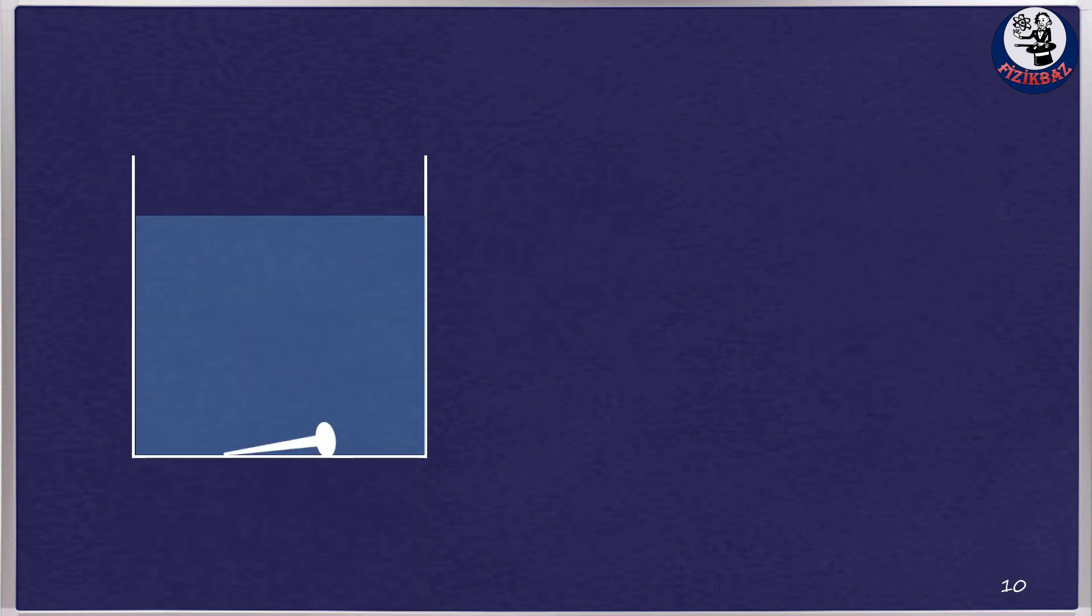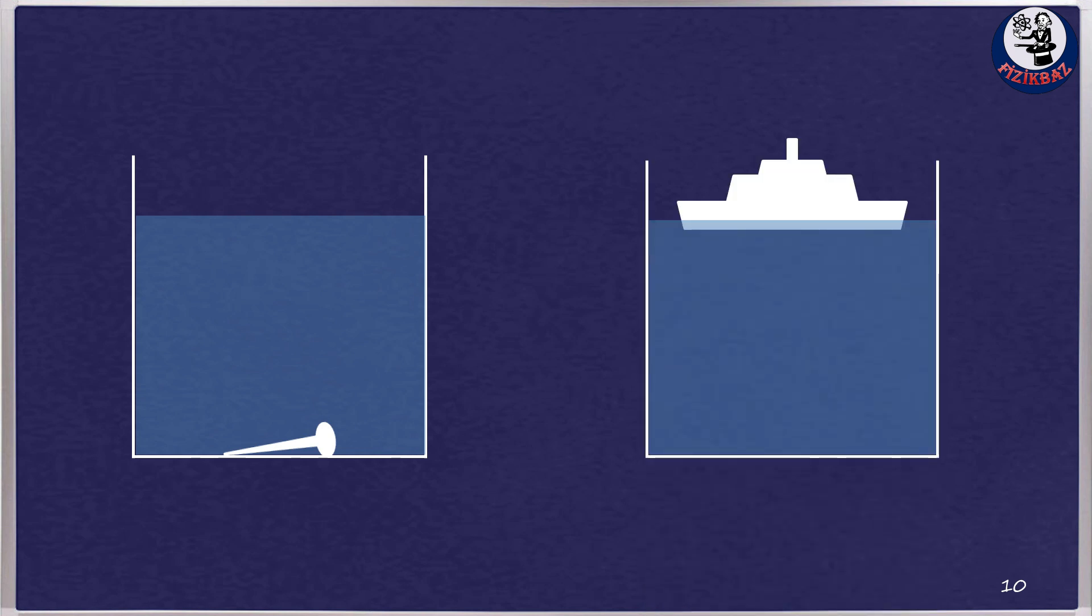An iron nail sinks in water, but an iron ship floats because its average density is less than that of water.